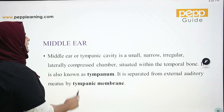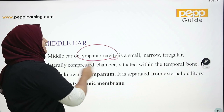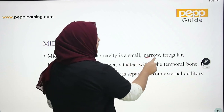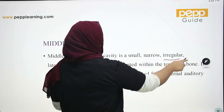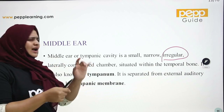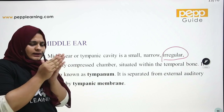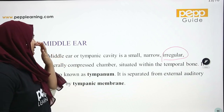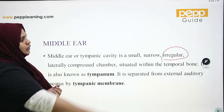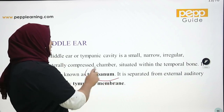The middle ear is also known as the tympanic cavity. It is a small, narrow, irregular space.